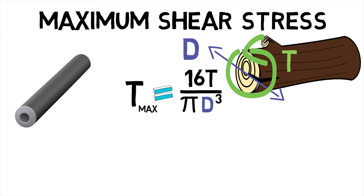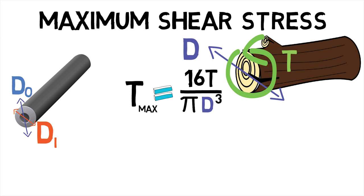The same value for a hollow shaft of outer diameter D0 and inner diameter Di is given by tau max equals 1.066 into 16T upon pi D0 cubed.